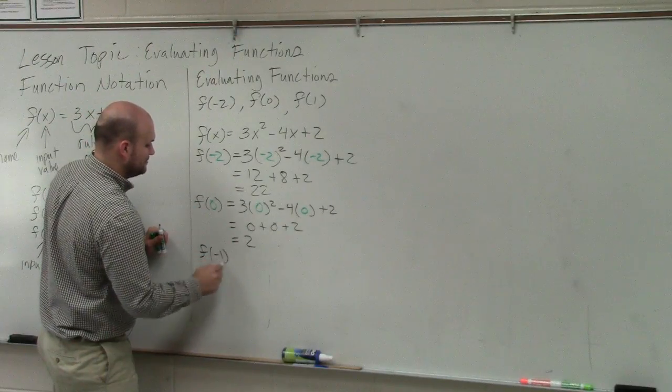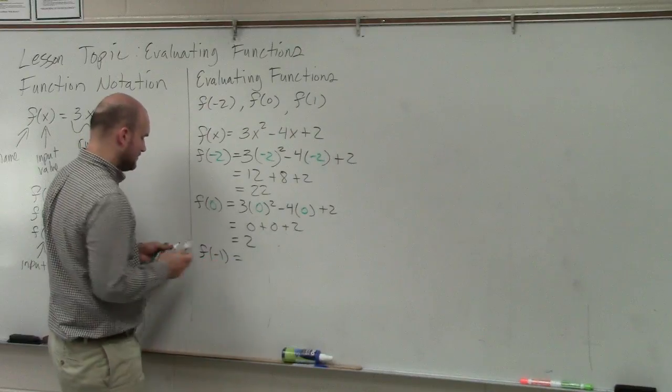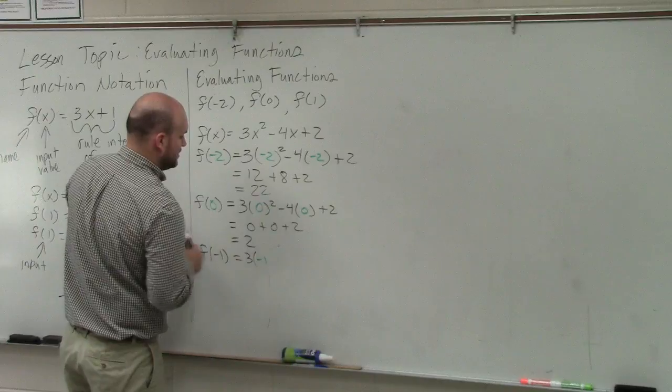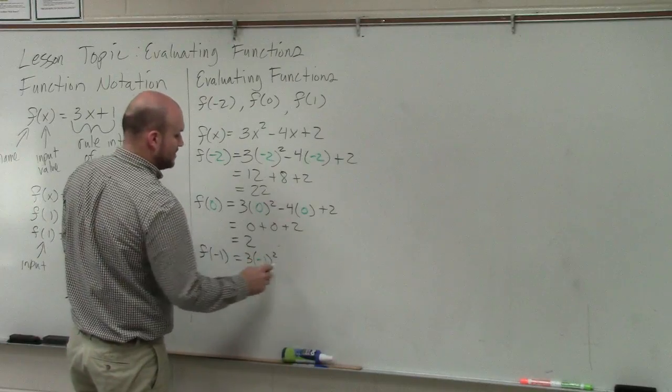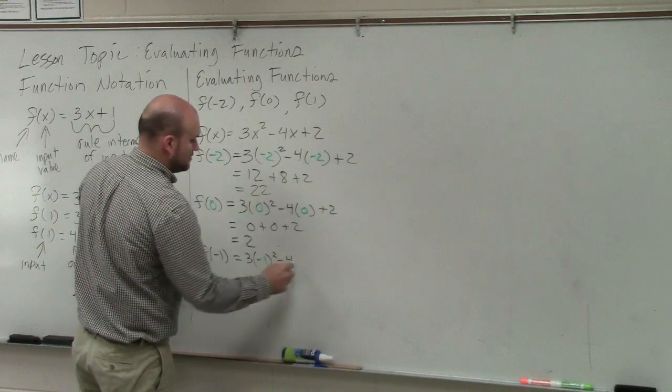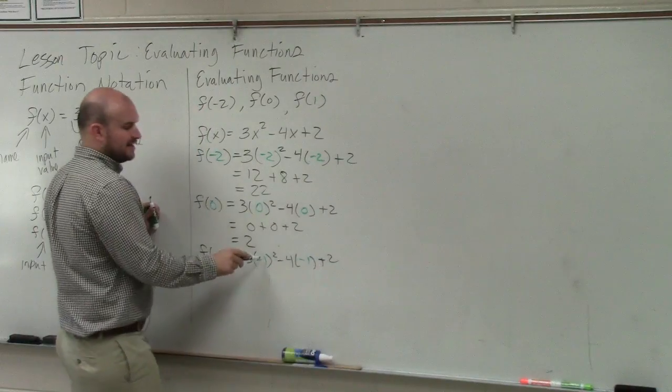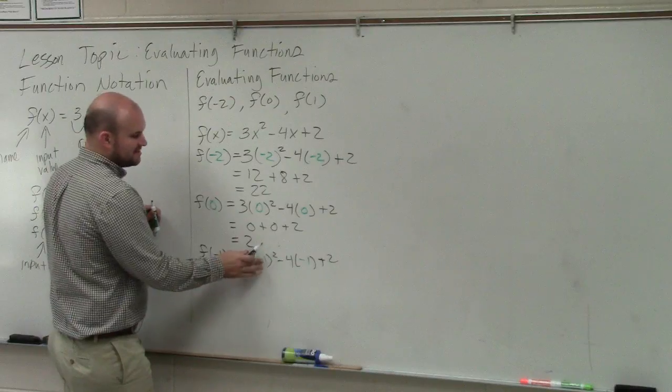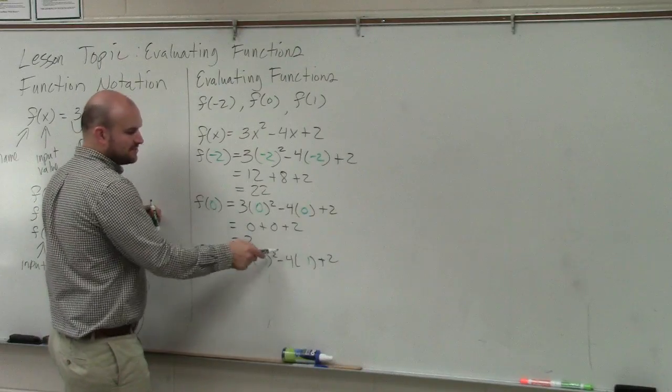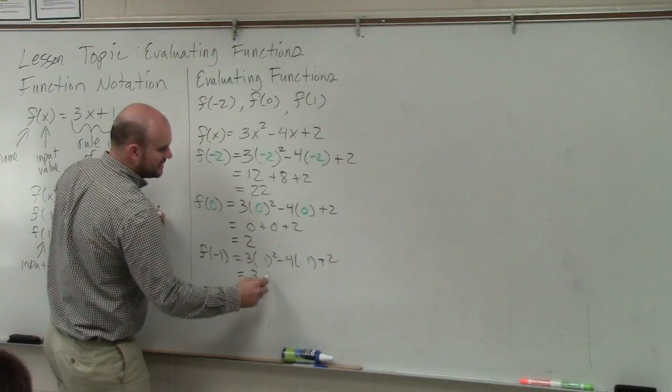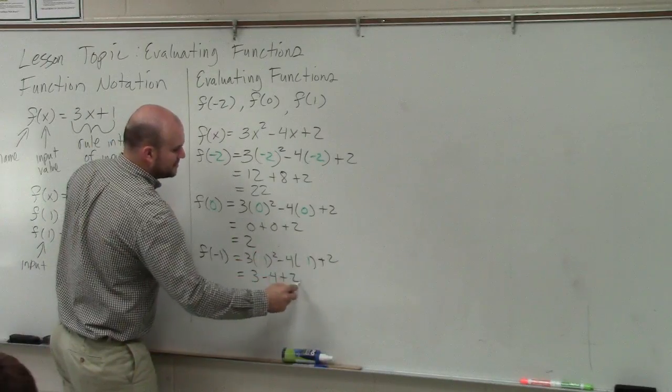And we'll do the last one. 3 times negative 1 squared minus 4 times negative 1 plus 2. Negative 1 squared. Wait a minute. That's positive 1. Thank you. 1 squared is 1. 1 times 3 is 3. Negative 4 times 1 is negative 4 and then plus 2.